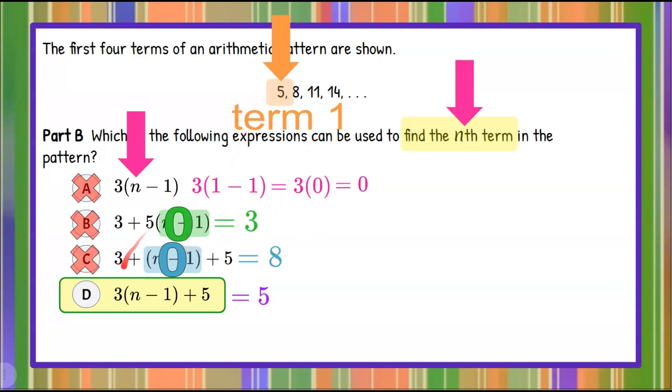So if we replace n here with 4, 4 subtract 1 is 3. 3 times 3 is 9. 9 plus 5 is 14. So you could use this expression as your rule to find any nth term of this arithmetic sequence.